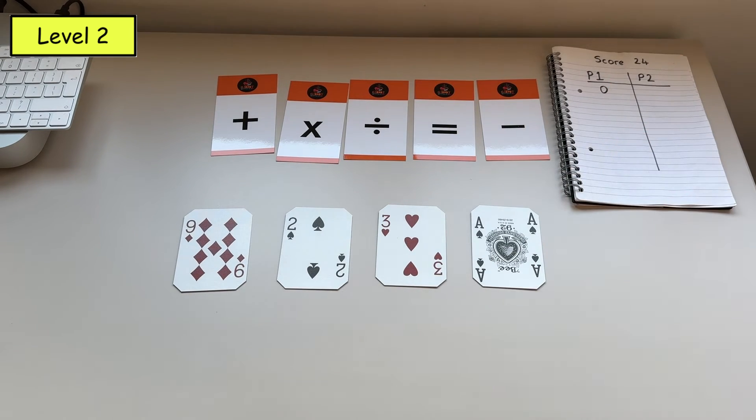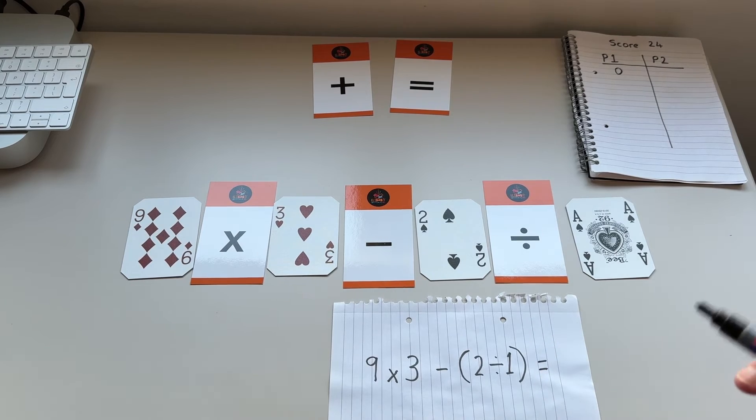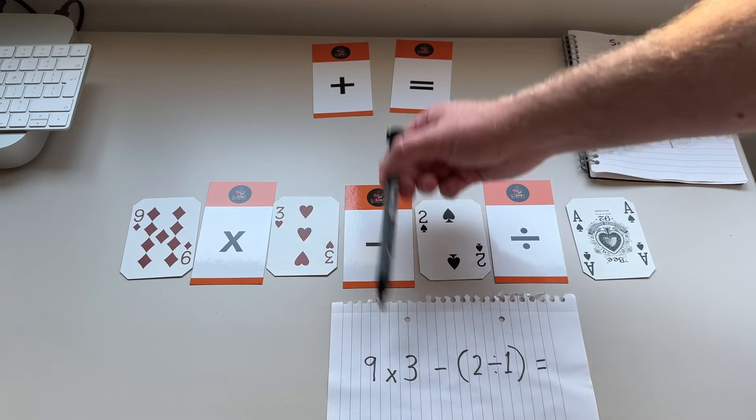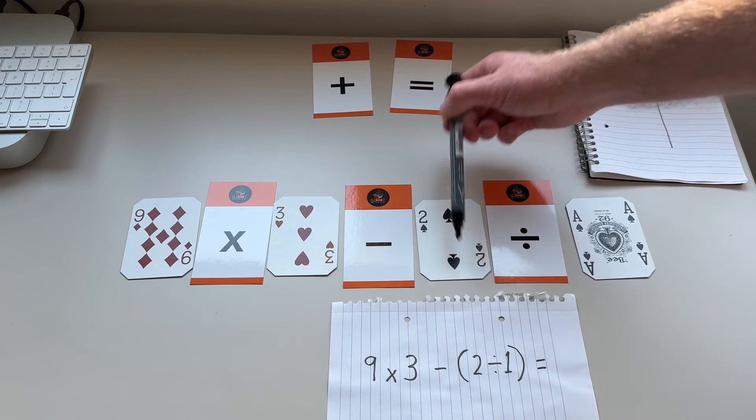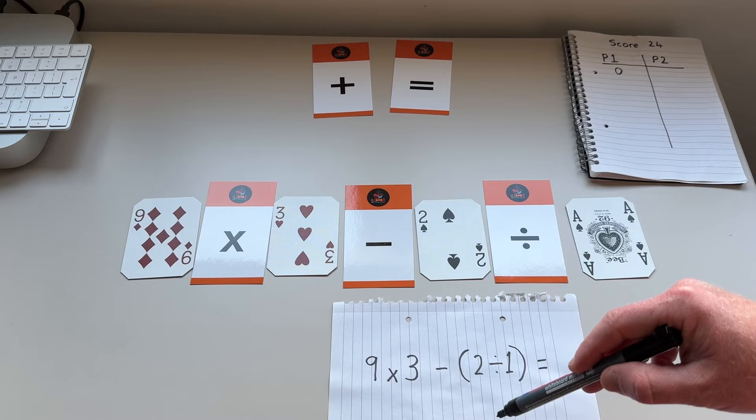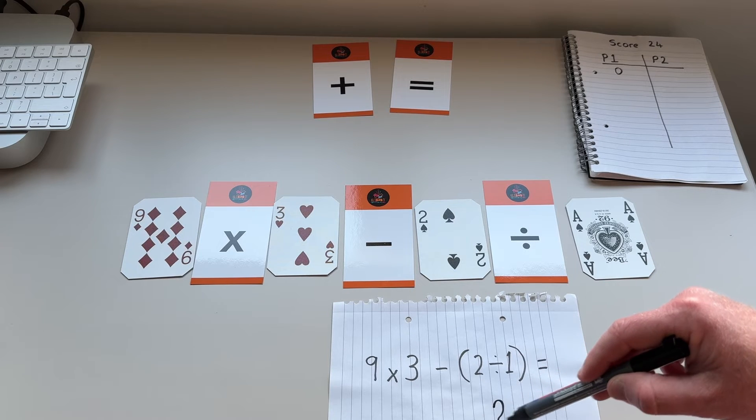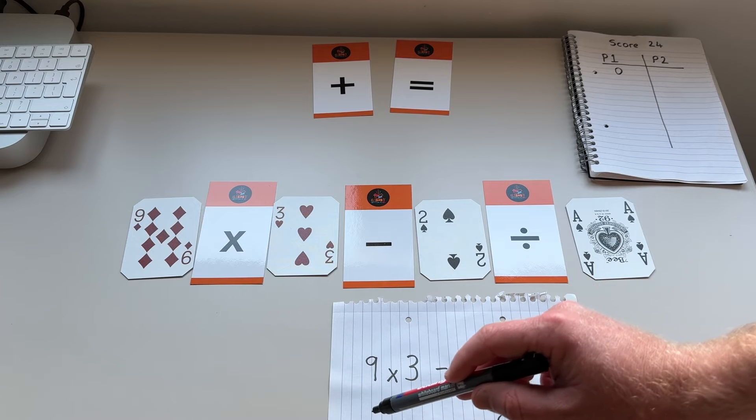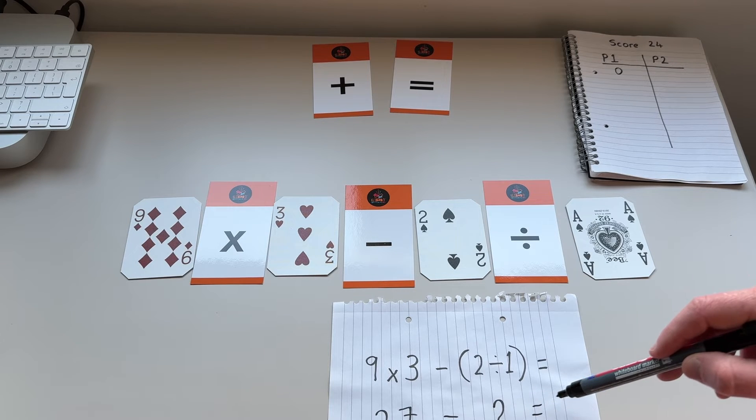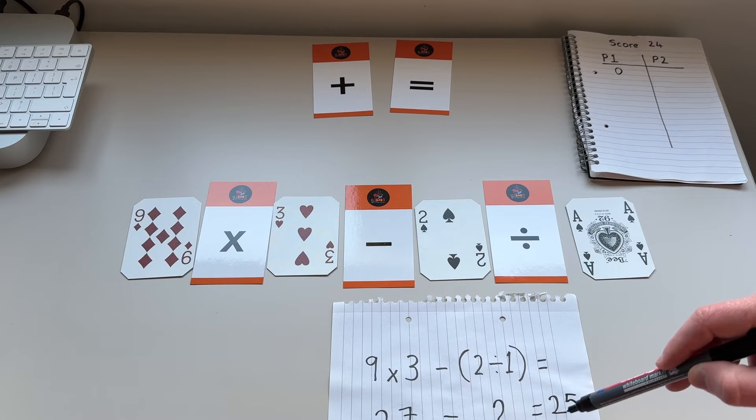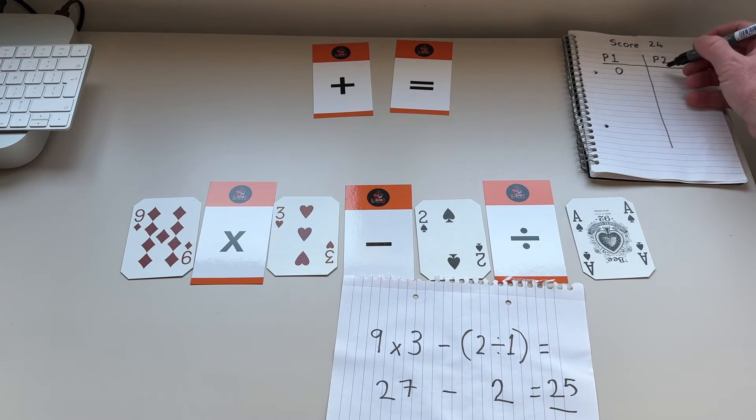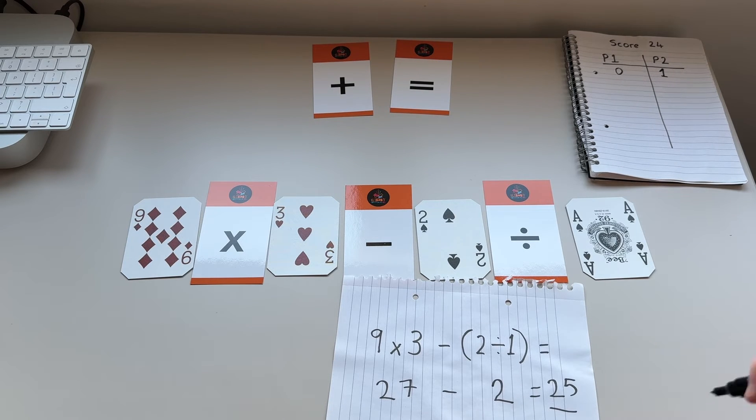It makes me think a little more. This example, player two has come up with nine multiplied by three. That is outside of brackets. And then we have take away two divided by one, which are inside brackets. So that would be two divided by one first, because they're in the brackets. Two divided by one is two. Nine times three is 27. And it would be 27 take away two equals 25. So they are one number away from 24. So they would receive a score of one point.